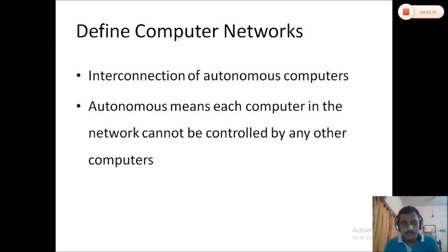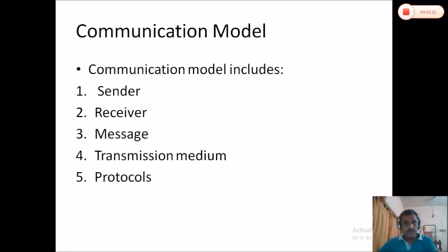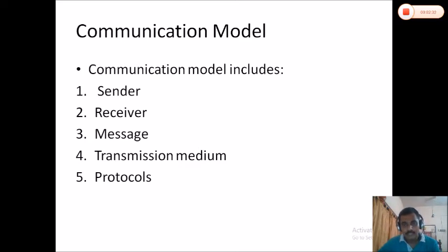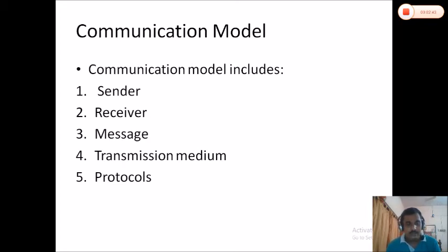So a computer network can be defined as the interconnection of autonomous computers. Now we are going to discuss the communication model. The communication model represents what components should be present in a communication. To make a communication successful, there are five components: sender, receiver, message, transmission medium, and protocol.